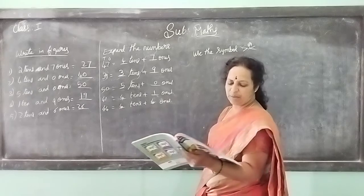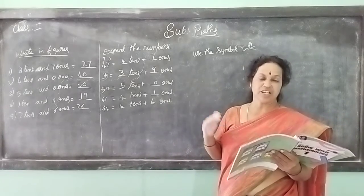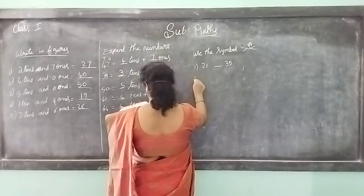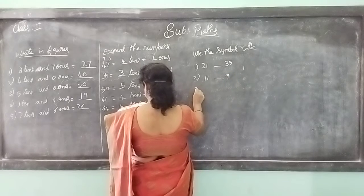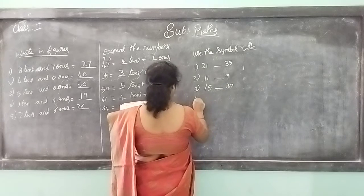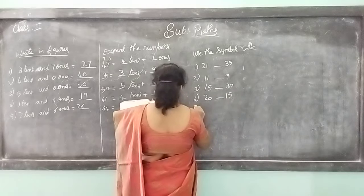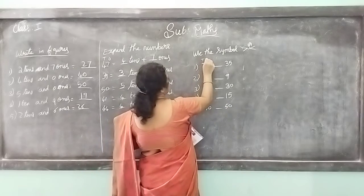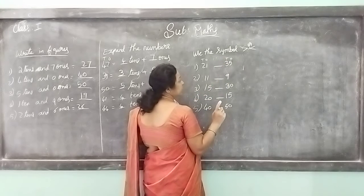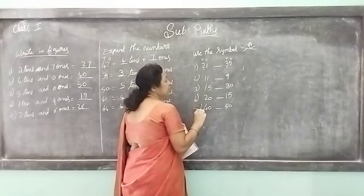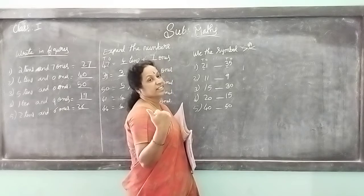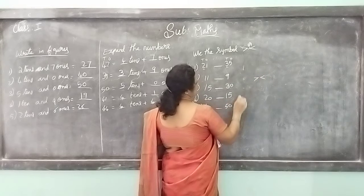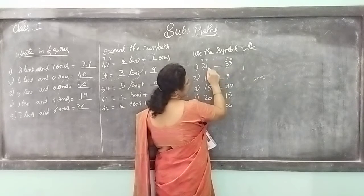Use the symbol - greater or lesser. See the number and compare. First you have to look at the tens place. If the tens place is the same, you have to look at the ones place. Here 2 tens and here 3 tens - which is greater? 3 is greater. So 21 is smaller compared to 35. You have to write the smaller symbol.